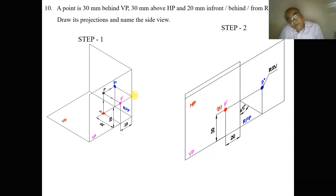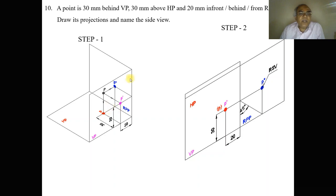When you look from the top view, you can see the distance behind VP projected onto the horizontal plane, and also the distance behind RPP — 20 mm — is seen here. When you look from the right side view, you can see the distance above HP projected here, and also the distance behind VP, which is seen in the right side view and projected accordingly.